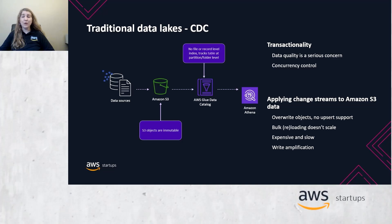Therefore, if you want a file, it must go to that partition and prefix on S3, and the job has to do multiple list operations to get the list of files. We cannot just run an update command or a SQL statement. Because objects are immutable, in order to update a record in a parquet file, we need to read the whole parquet file, process it in memory, and then write a new parquet file to S3 storage. No upsert support results in write amplification.